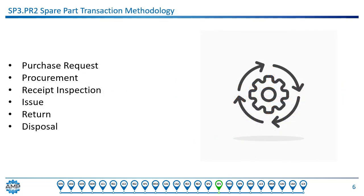Now let's talk about our second process, Spare Part Transactions. A spare part makes a few stops on its journey between being purchased and being installed in an operating asset. Each point in the journey needs to be recognized as a transaction and documented. For instance, we may have a purchase request process, so we have to have rules for creating the purchase request, reviewing the purchase request, and approving it.